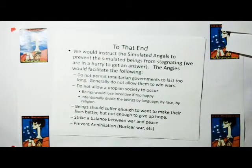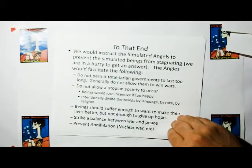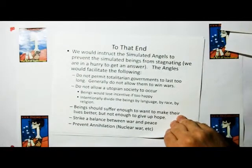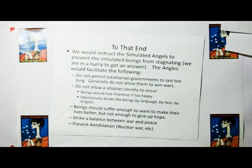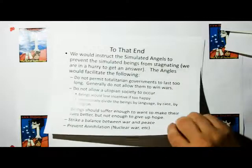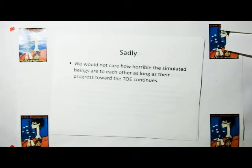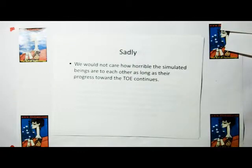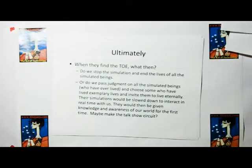To that end, we would instruct the simulated angels to prevent the simulated beings from stagnating, because we're in a hurry to get an answer, obviously. The angels would facilitate the following. Do not prevent totalitarian governments. Do not allow utopian society, because we don't want people getting fat, dumb, and happy and not doing anything. But we did want the beings to suffer enough to make their lives better. We want them to suffer enough to keep the fire burning in their hearts, so that they can get to that theory of everything. If we make things too difficult, they're going to give up hope. And we obviously have to strike a balance between war and peace. We don't want a too peaceful society. We don't want a too warfare of society. And so probably what we would do is fragment the people by language, by culture, by religion even, to keep enough chaos in the world, so that the search for a better existence will always be pushing them ahead. And to that end, we would probably not care how horrible the simulated beings are to each other, as long as they're progressing toward a theory of everything.